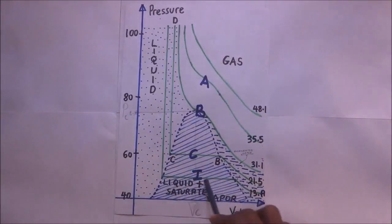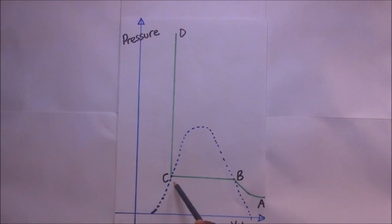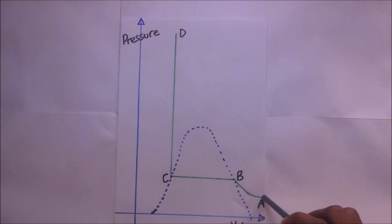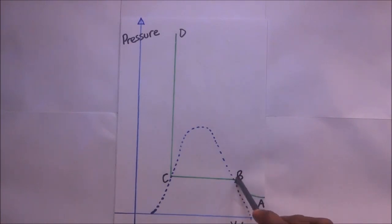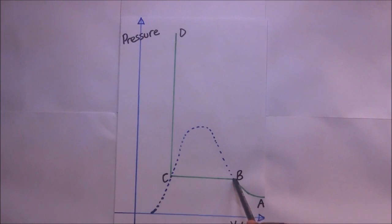Let's examine this isotherm below the critical temperature in detail. I have labeled it with points A, B, C, and D. At point A, the gas is in a gaseous state and the vapor is unsaturated. As the volume keeps reducing due to pressure increase, it moves toward point B. Along A to B, the vapor is unsaturated and fairly obeys Boyle's Law.